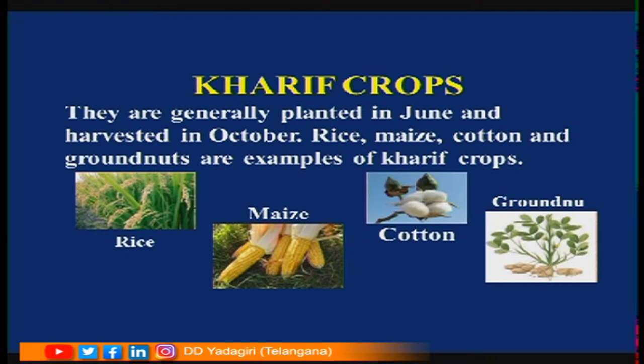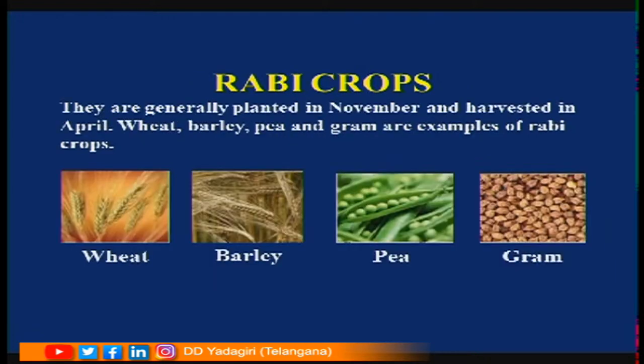The next type is Rabi crops. These crops are grown during winter season. Rabi crops are generally planted in November and harvested in April. Examples are wheat, barley, pea, and gram.